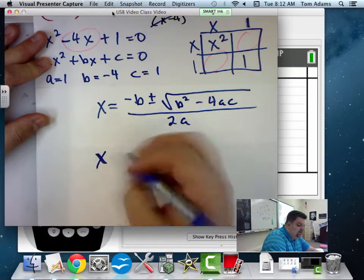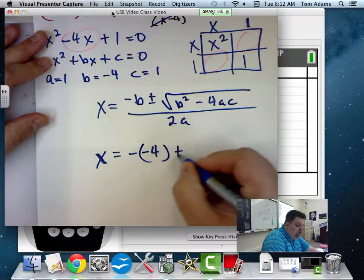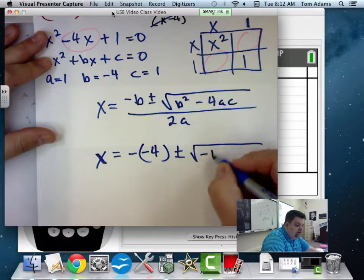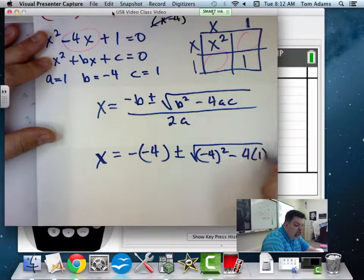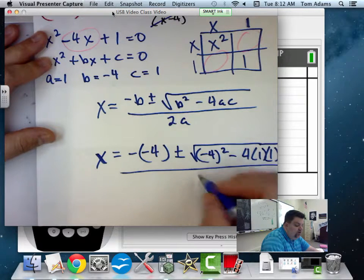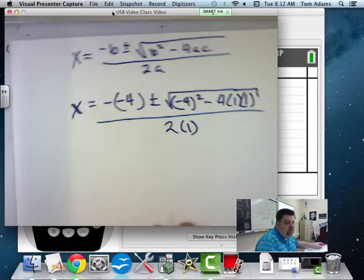So then x is equal to negative b, which is negative 4, plus or minus the square root of negative 4 squared minus 4 times a, which is 1, times c, which is 1, all over 2 times a, which is 1. Am I doing good so far? You guys with me so far?